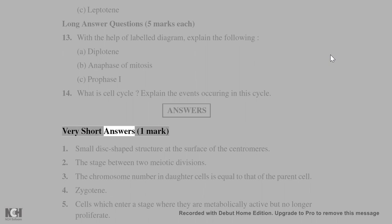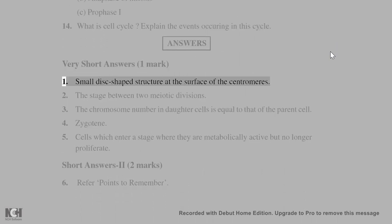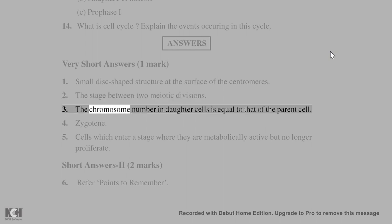Answers. Very short answers (1 mark): (1) Small disc-shaped structure at the surface of the centromeres. (2) The stage between two meiotic divisions. (3) The chromosome number in daughter cells is equal to that of the parent cell. (4) Zygotene.